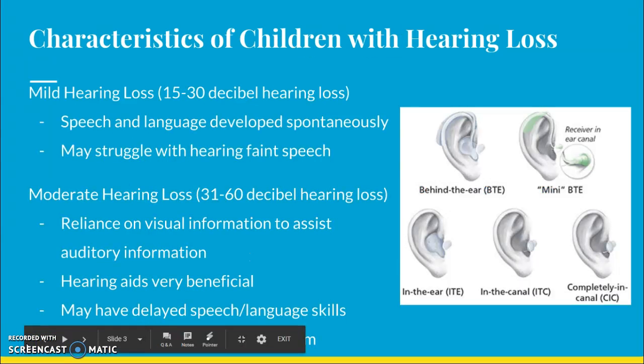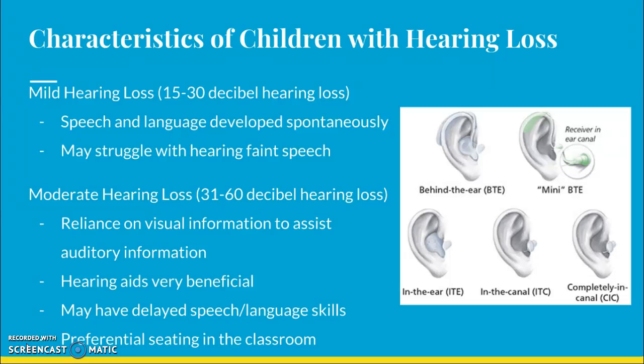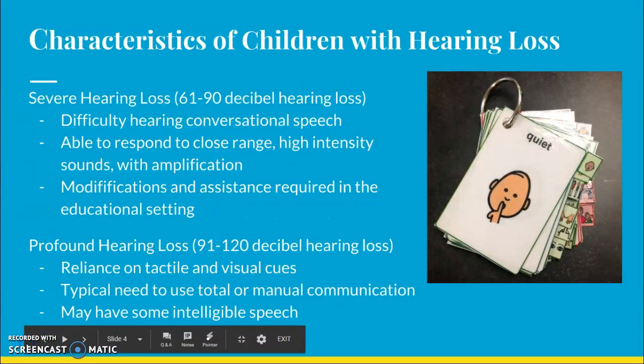Next up are some characteristics of children with hearing loss. We have five different levels. The first is mild hearing loss, which is only 15 to 30 decibels, where they struggle with hearing faint speech and they develop speech and language normally. Then we have moderate hearing loss, 31 to 60 decibels lost. They're going to be a little more reliant on visuals. As soon as we can get hearing aids for these individuals, especially as children, that's very beneficial. They might have delayed speech and language skills, and it's important to have preferential seating in the classroom, where they're as close as possible to the board or to the teacher.